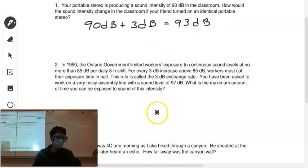Now here's another interesting question. So in 1990, the Ontario government limited workers exposure to continuous sound levels at no more than 85 decibels for every eight hour shift. For every three decibel increase, so for every time your intensity doubles above 85, workers must cut their exposure time in half. Makes sense. The intensity doubles. You cut your time in half. So this is called the three decibel exchange rate.